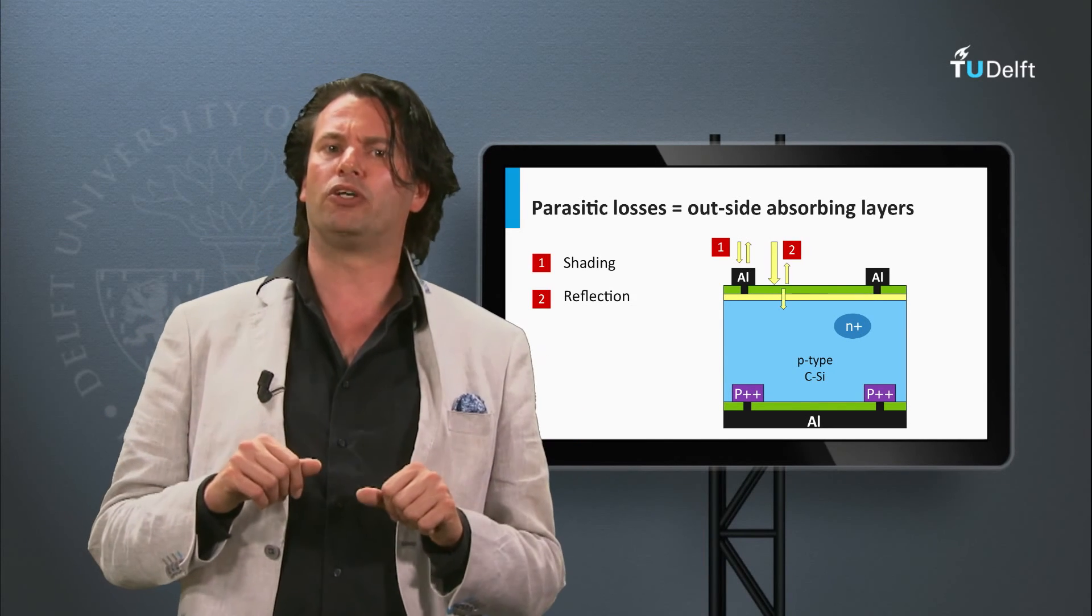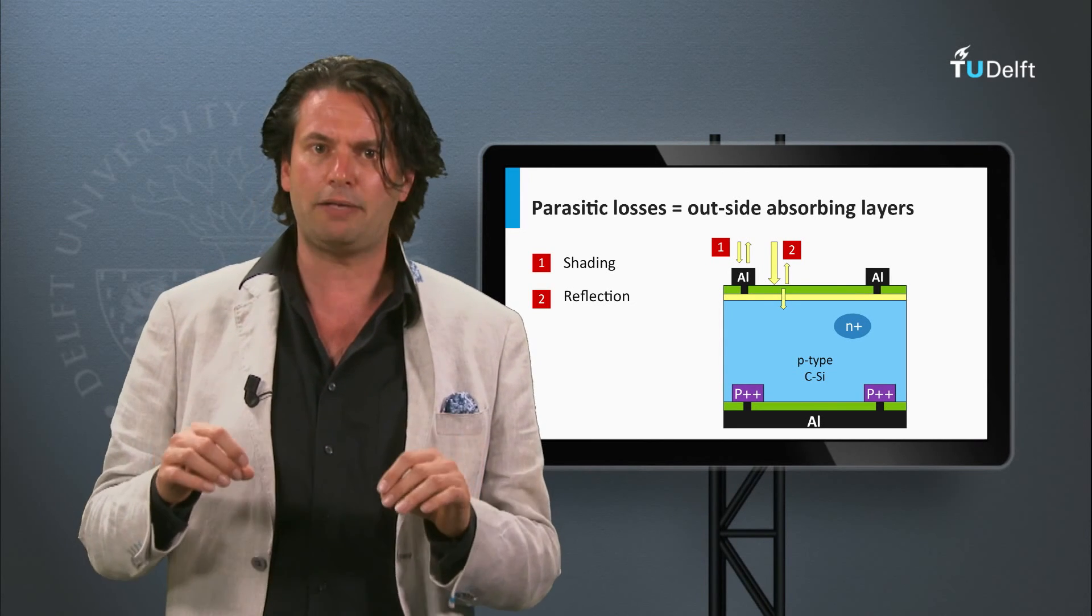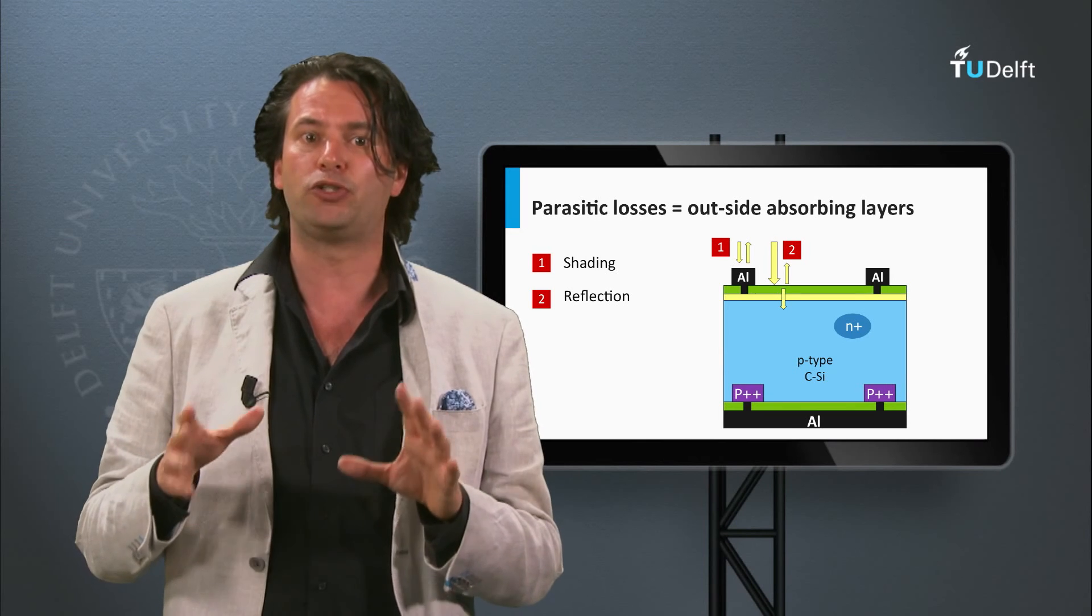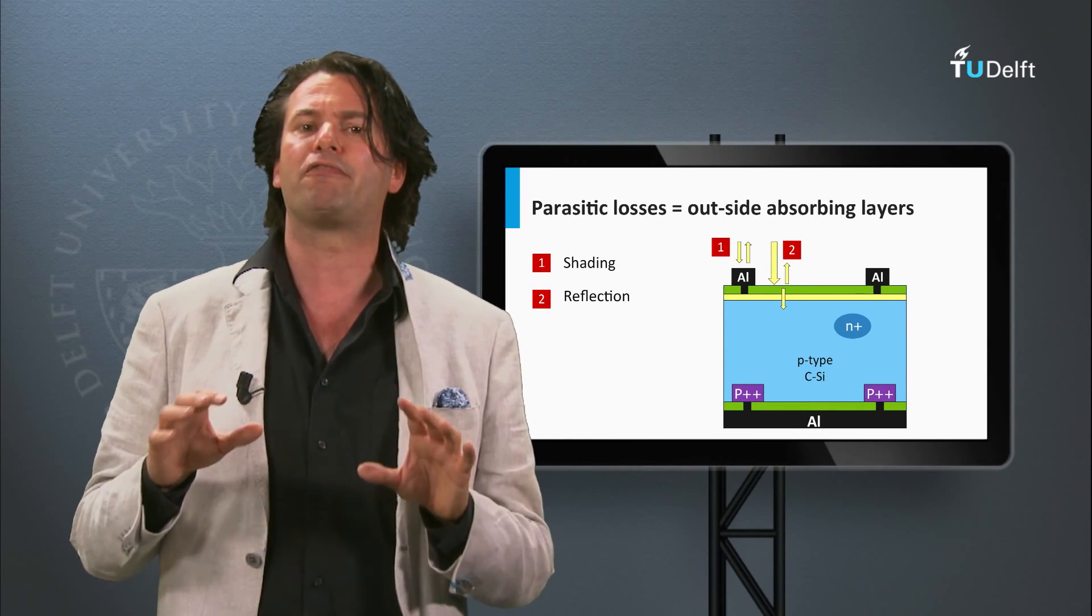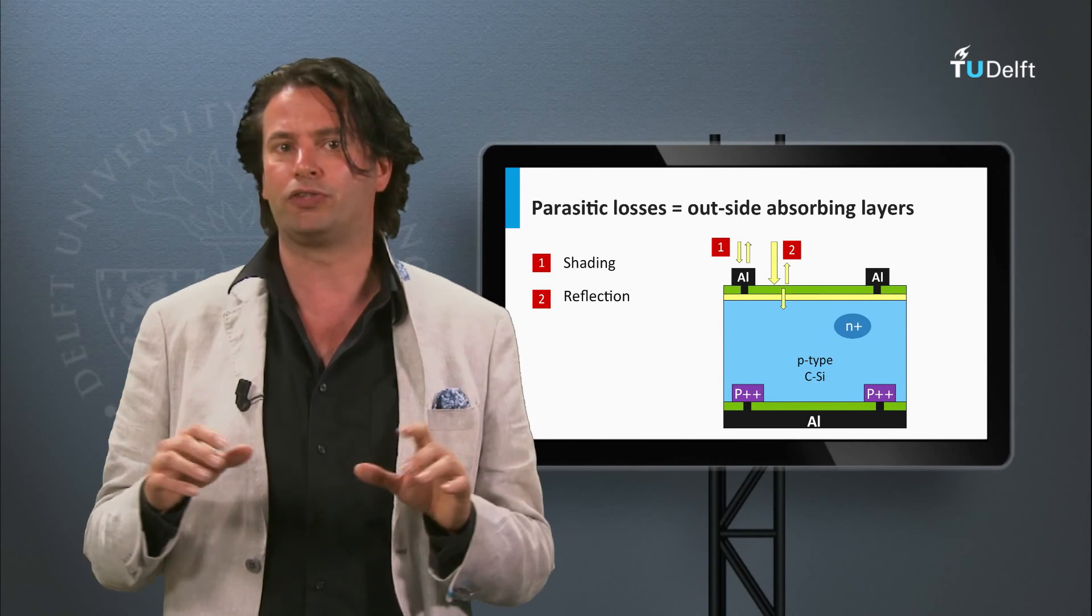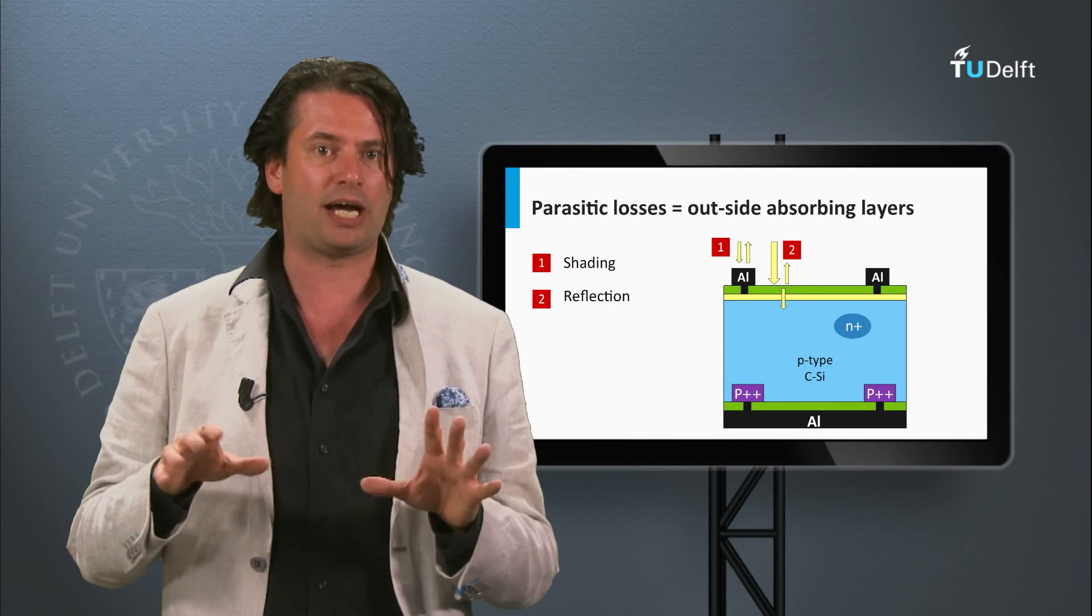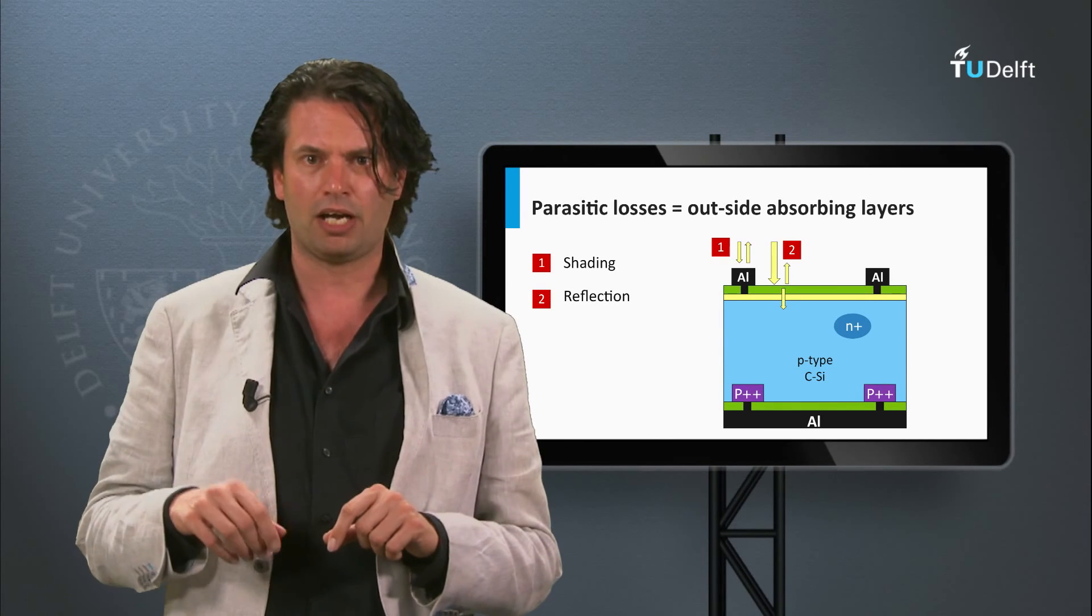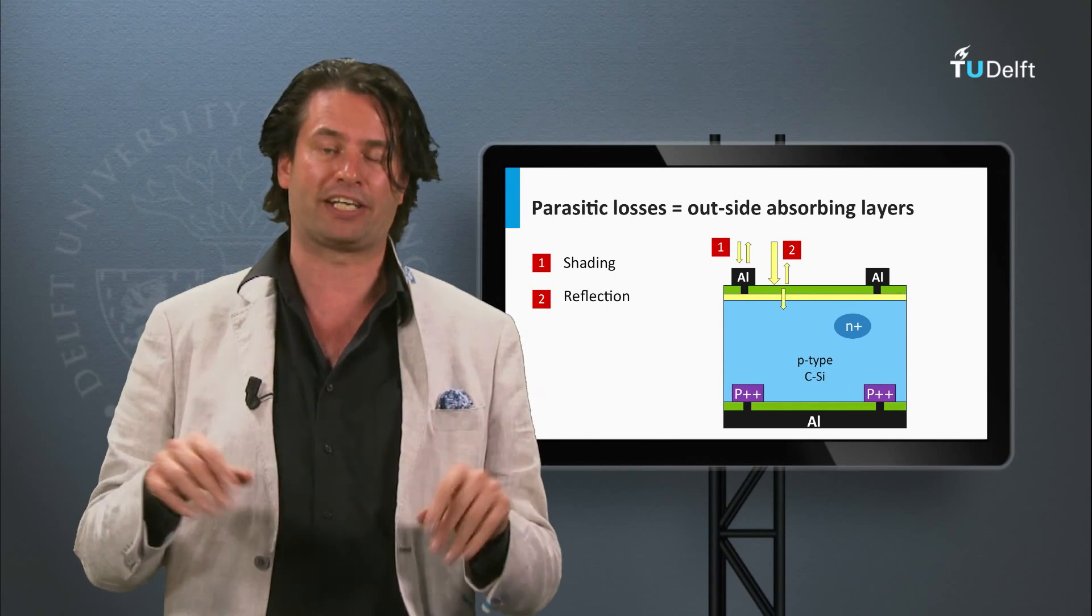The second optical loss mechanism is the reflection at the front interface of the solar cell. The light passing through an interface between two media with different refractive indices will always be partly reflected and partly transmitted at the interface. As all types of solar cells suffer from this loss mechanism, I would like to spend some time on this in the next block. I will discuss some concepts which are being used as anti-reflection coatings.